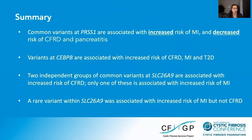To summarize the genetic modifiers of CFRD and MI: common variants at PRSS1 are associated with increased risk of MI and decreased risk of CFRD and pancreatitis. Variants at CEBPB are associated with increased risk of CFRD, MI, and type 2 diabetes. Two independent groups of common variants at SLC26A9 are associated with increased risk of CFRD, and only one is also associated with increased risk of MI. A rare variant within SLC26A9 was associated with increased risk of MI but not CFRD.